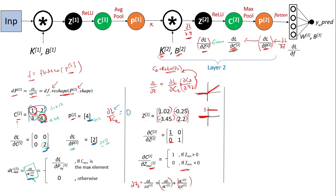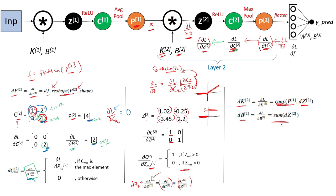We have now obtained del L by del C2. Moving one step back to find del L by del Z2: we know C2 is the ReLU of Z2, so by the chain rule del L by del Z2 equals del L by del C2 element-wise multiplied by del C2 by del Z2. The derivative of ReLU is 1 for positive inputs and 0 for negative inputs. So dZ2 is obtained by this element-wise product, and once we have dZ2 we obtain del L by del K2 via convolution of the input image with dZ2, and del L by del B2 by summing dZ2.